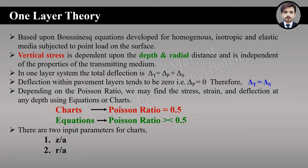We have two methods: using charts or using equations. If the Poisson ratio is 0.5, we prefer charts because each chart is developed for Poisson ratio 0.5. If the Poisson ratio is greater than 0.5, we will use the equations. When using charts, we have two input parameters in one layer theory: one is z/a and the other is r/a.